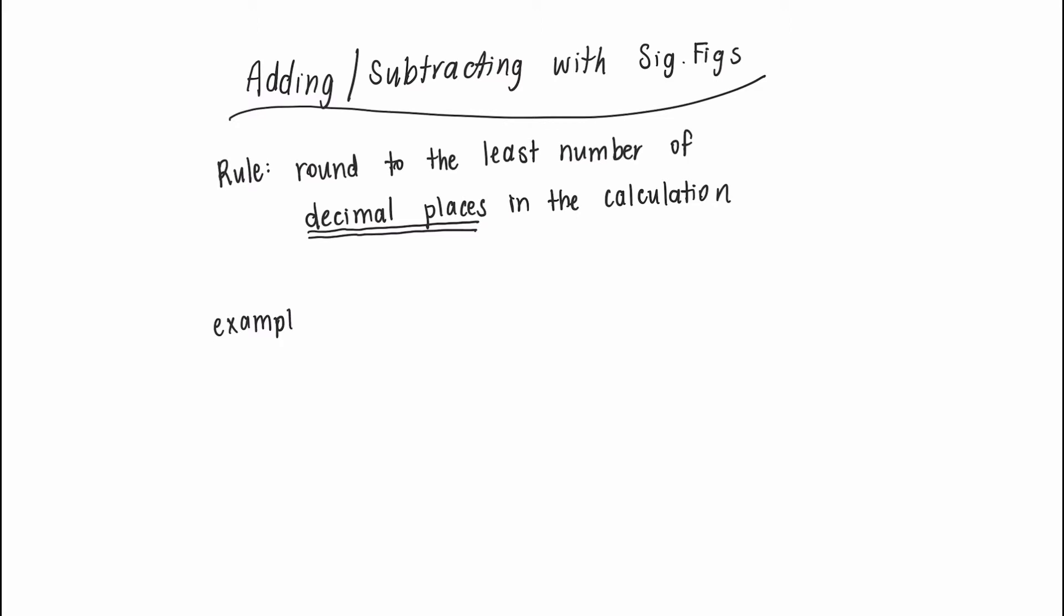Let's look at an example where we're adding with sig figs. Let's take 25.4 added with 472.32. Now the first step is to just do the addition as normal with all the decimals, and you should end with 497.72.